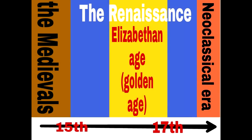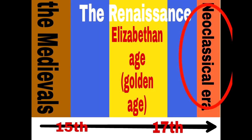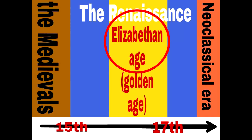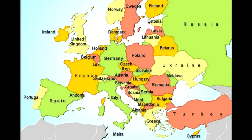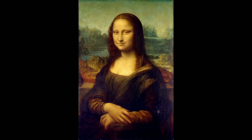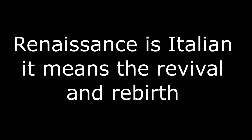Now first we need to talk about what is the renaissance. The renaissance is the period from the 15th century to the 17th century. It is the period after the medieval times and before the age of the restoration and the age of neoclassicism. It is the age when Queen Elizabeth I had lived, so in England it was the golden age. But it did not start in England — it started in Italy, with the works of Michelangelo and Leonardo da Vinci. The word renaissance itself is an Italian word.